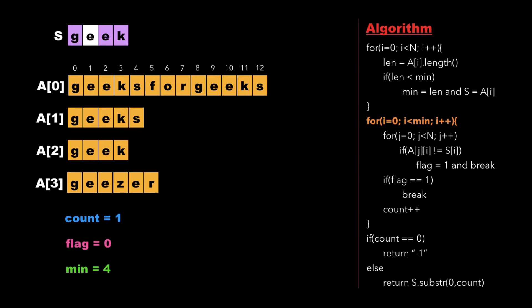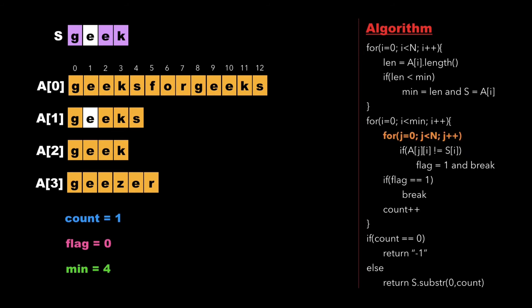Now i points to the second character of string s, which is 'e'. We traverse the strings in the array and check whether the second character of s equals the second character of a[0]. Both are equal, so we update j. Again both characters match for each subsequent string. We continue until we reach a[3], and since the value of flag is zero, we update count to two and increment i.